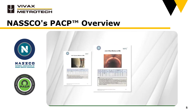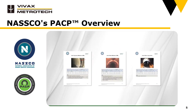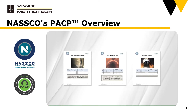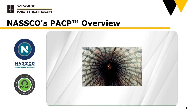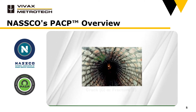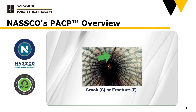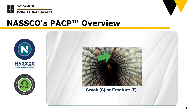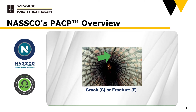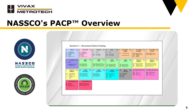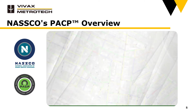Let's discuss why standardization is important and how using a well-established condition coding system like PACP provides value. To illustrate, let's take a moment and choose which code you might use for this image. Would you identify this as a crack using the letter C, or a fracture using the letter F? We will provide the correct answer later. PACP provides a standard set of codes and a standardized method to apply those codes to condition assessment of the infrastructure.